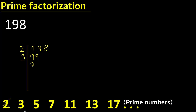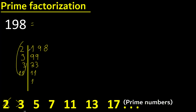99 divided by 3 is 33. 33 divided by 3 is 11. 11 cannot be divided by 3. 11 is a prime number, therefore divided by 11 is 1. Finish.